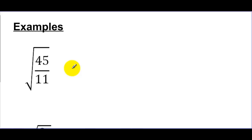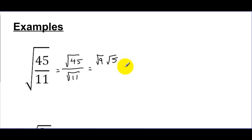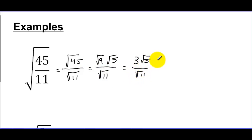For this next expression, our job is to simplify. The first problem is that 45/11 is a fraction under a radical, which isn't allowed, so I separate it into square root of 45 over square root of 11. Now the square root of 45 is not simplified — 45 has a factor of 9, so I write it as square root of 9 times square root of 5. Since the square root of 9 is 3, that simplifies. I'll bring the square root of 11 along and handle one thing at a time.